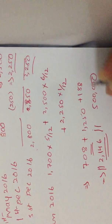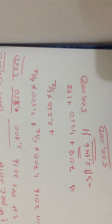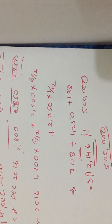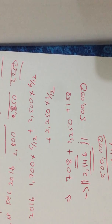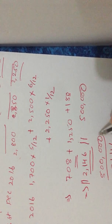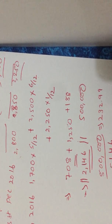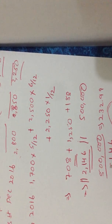We have a profit of $500,000. So EPS equals 500,000 divided by 2,146. Using the calculator, that gives approximately $232.99 per share. This is the Earnings Per Share.